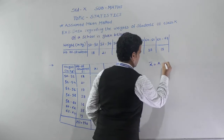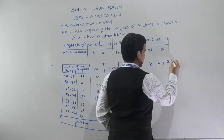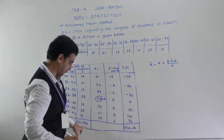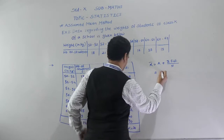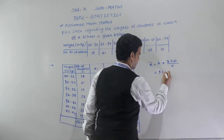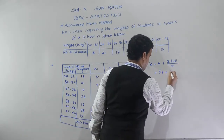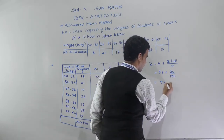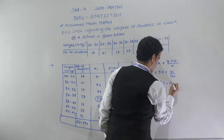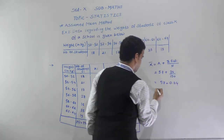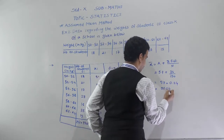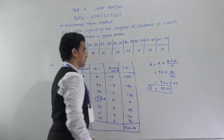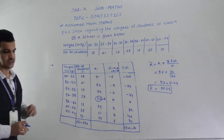Using the formula x̄ = A + (Σfi·di / n): A = 57, Σfi·di = 36, n = Σfi = 150. So x̄ = 57 + 36/150 = 57 + 0.24 = 57.24. Therefore, the mean weight of the students is 57.24 kg.